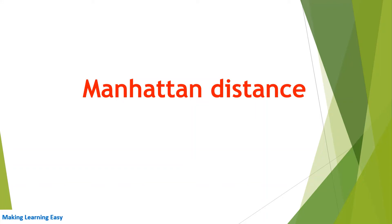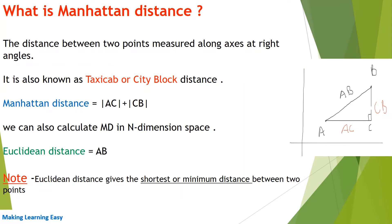Hello everyone, welcome to the session. In this session we are going to discuss Manhattan distance. The distance between two points measured along axes at right angles is called Manhattan distance. In the screenshot you can see there is a point A and B. If we calculate the Manhattan distance between point A and B, that would be the absolute value of AC plus the absolute value of CB. This graph is for two-dimensional space; we can also calculate Manhattan distance for n-dimensional space.